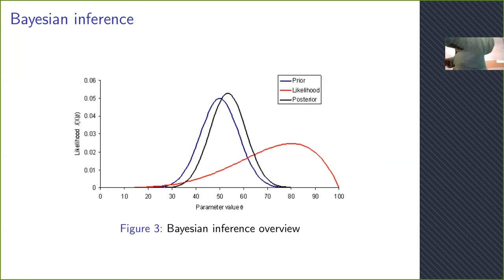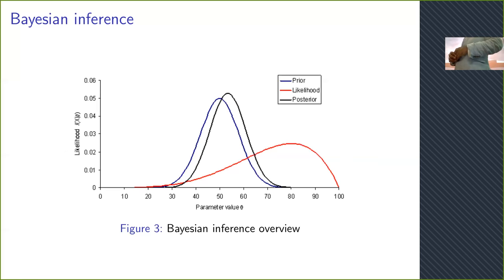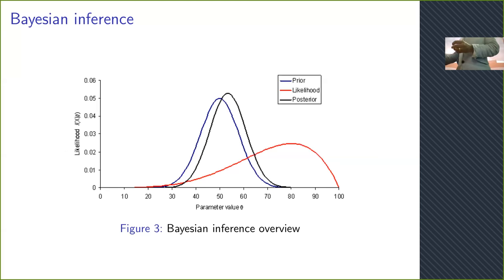In optimization, if the true value is five but the first value you propose is two and after optimization the value you get is four, you don't really get the true value in many cases. The first value you started with is seen as prior information. Every time you propose a new solution, the likelihood takes account of the prior distribution as well.